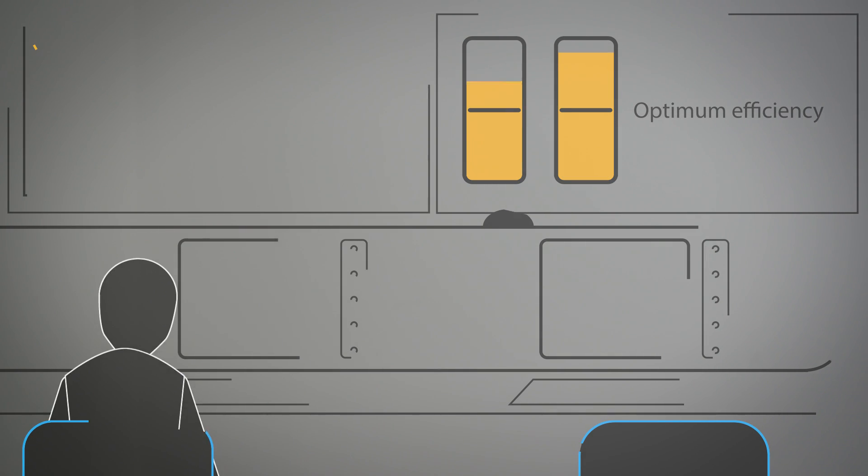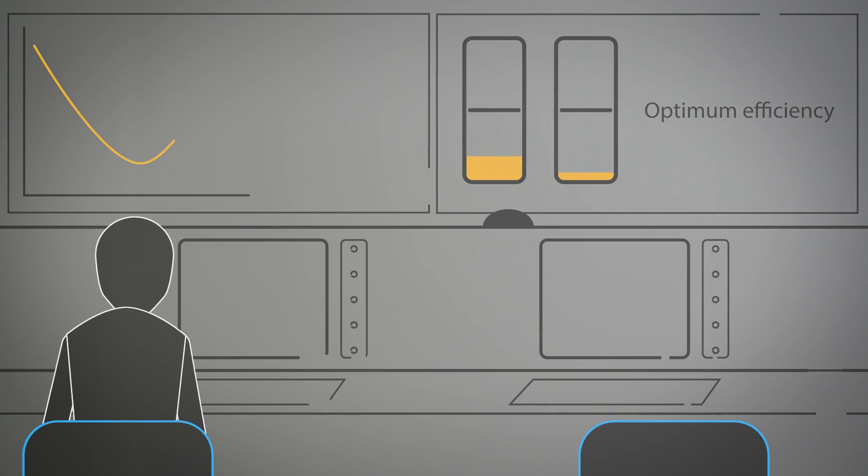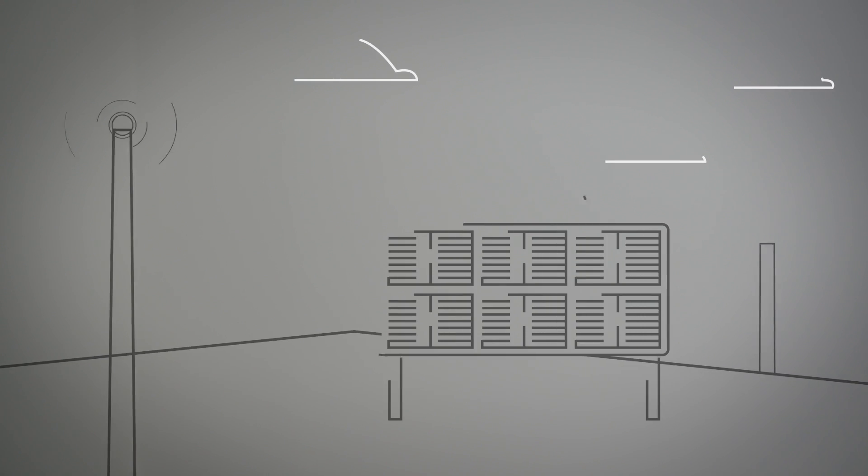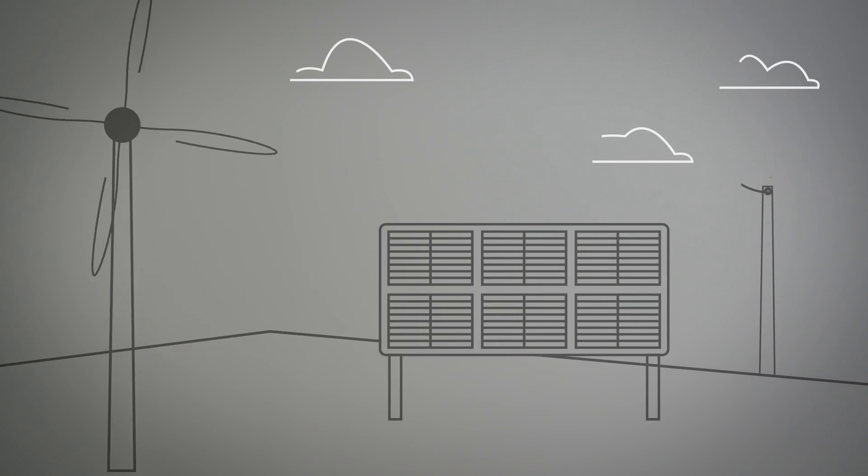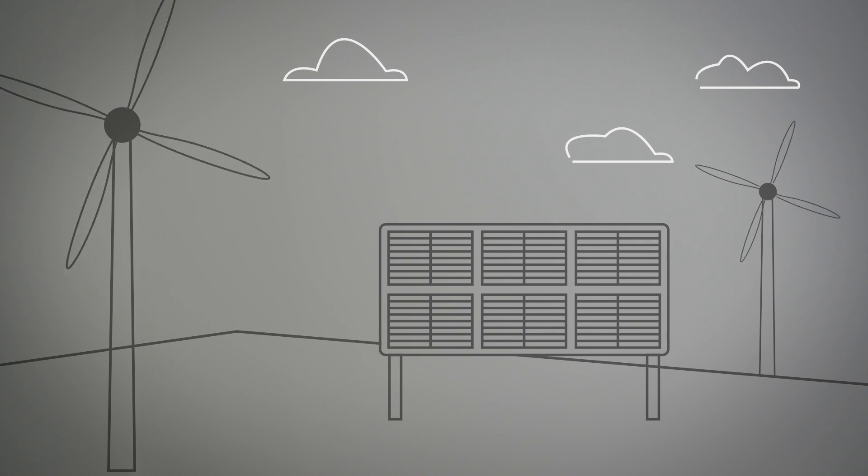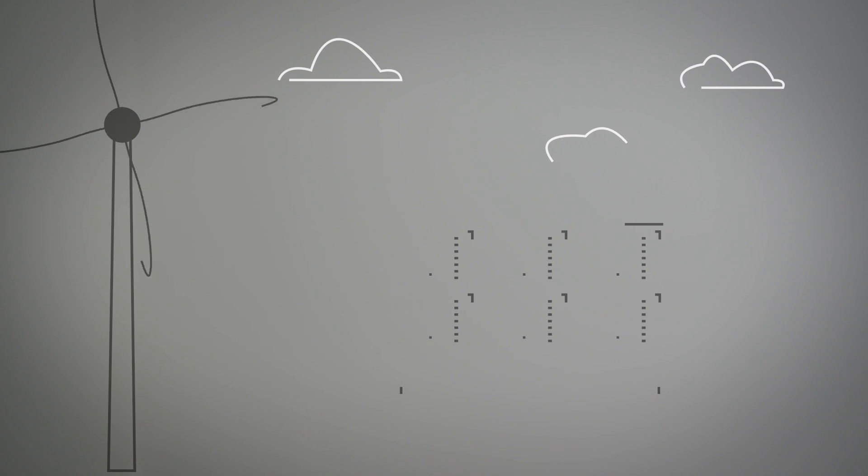That ability to suddenly take load off the grid or put it back on gives us a unique position. That's a very valuable service to the grid operator because we help them balance supply and demand of electricity. By creating all this capacity from batteries or hot water tanks, we're letting the grid integrate more renewables onto the system.